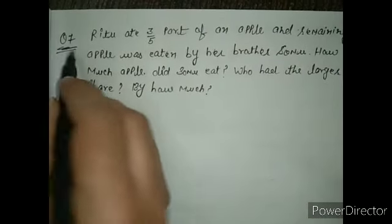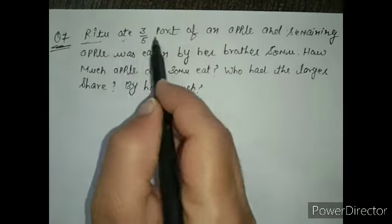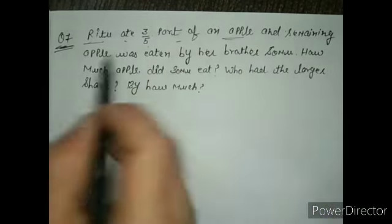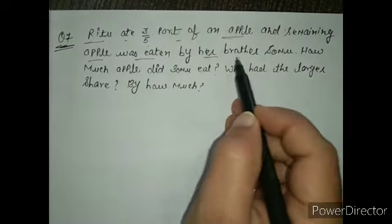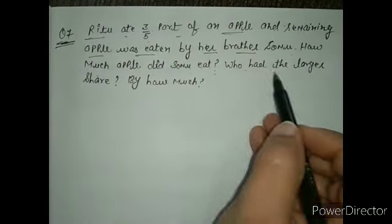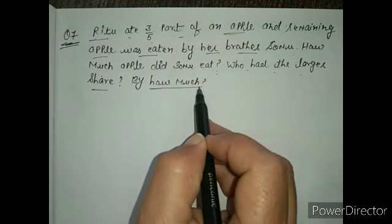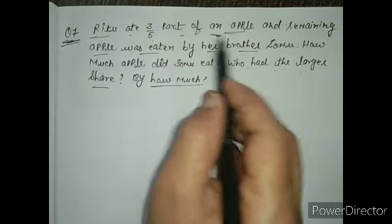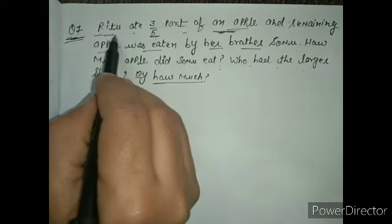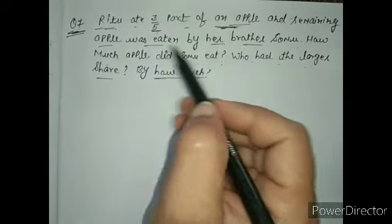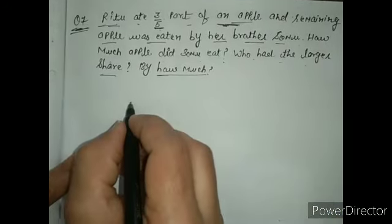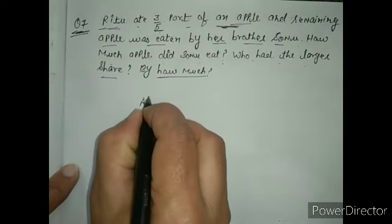In question number 7, it is given that Ritu ate 3/5 part of an apple and the remaining apple was eaten by her brother Somu. How much apple did Somu eat, and who ate the larger share by how much? One apple is given. Ritu eats 3/5 part and Somu eats the remaining part.